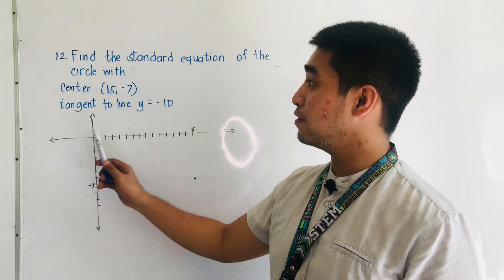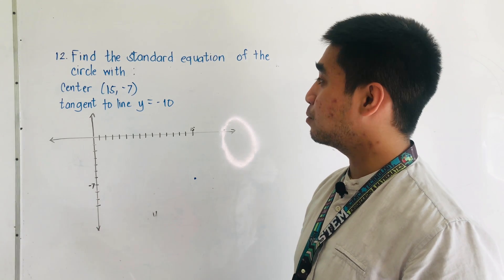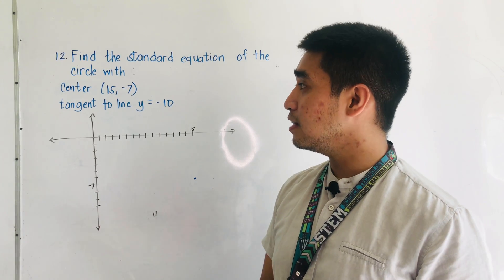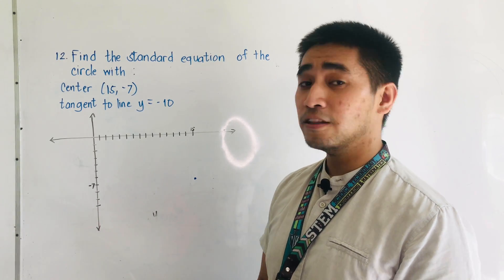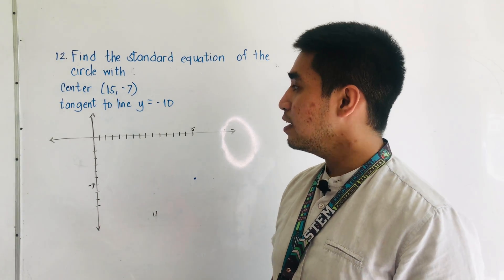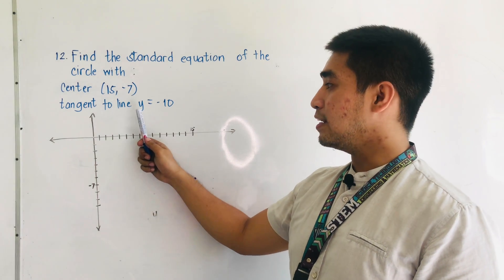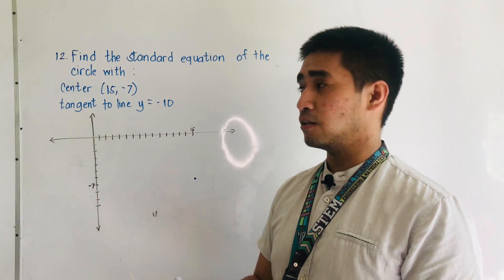Therefore, we are given the problem: find the standard equation of the circle with the center at (15, -7) and tangent to the line y is equal to negative 10.